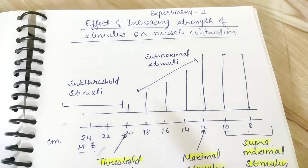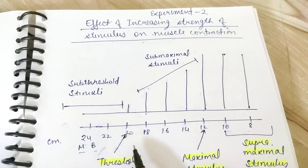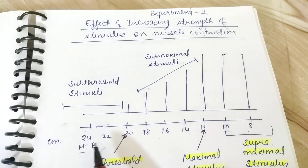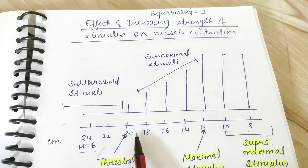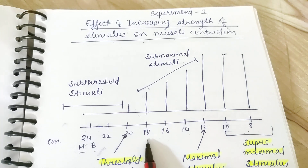The next thing is: what is this labeling? Sometimes you find a label of M and B on the graph. To understand this, you should know how the experiment was done at that time.